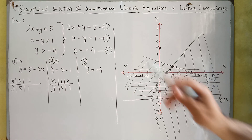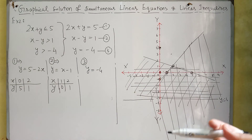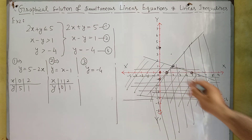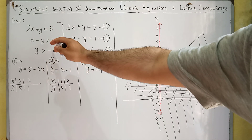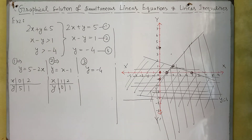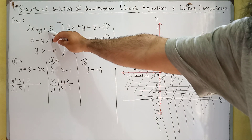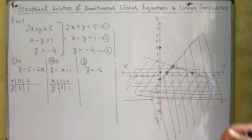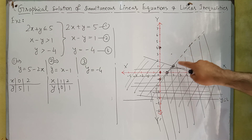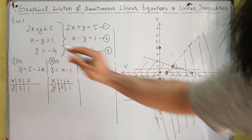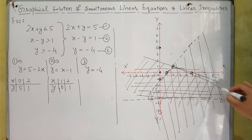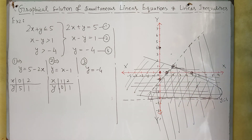One more important point: for inequalities with a less-than-or-equal or greater-than-or-equal sign, we represent the boundary by a solid line. But for strict inequalities — just greater than or just less than — we use a dotted line. In this example, the first inequality uses less than or equal, so it has a solid boundary, while the second and third use strict greater than, so they are represented by dotted lines. The final required region is the area bounded by all three inequalities.